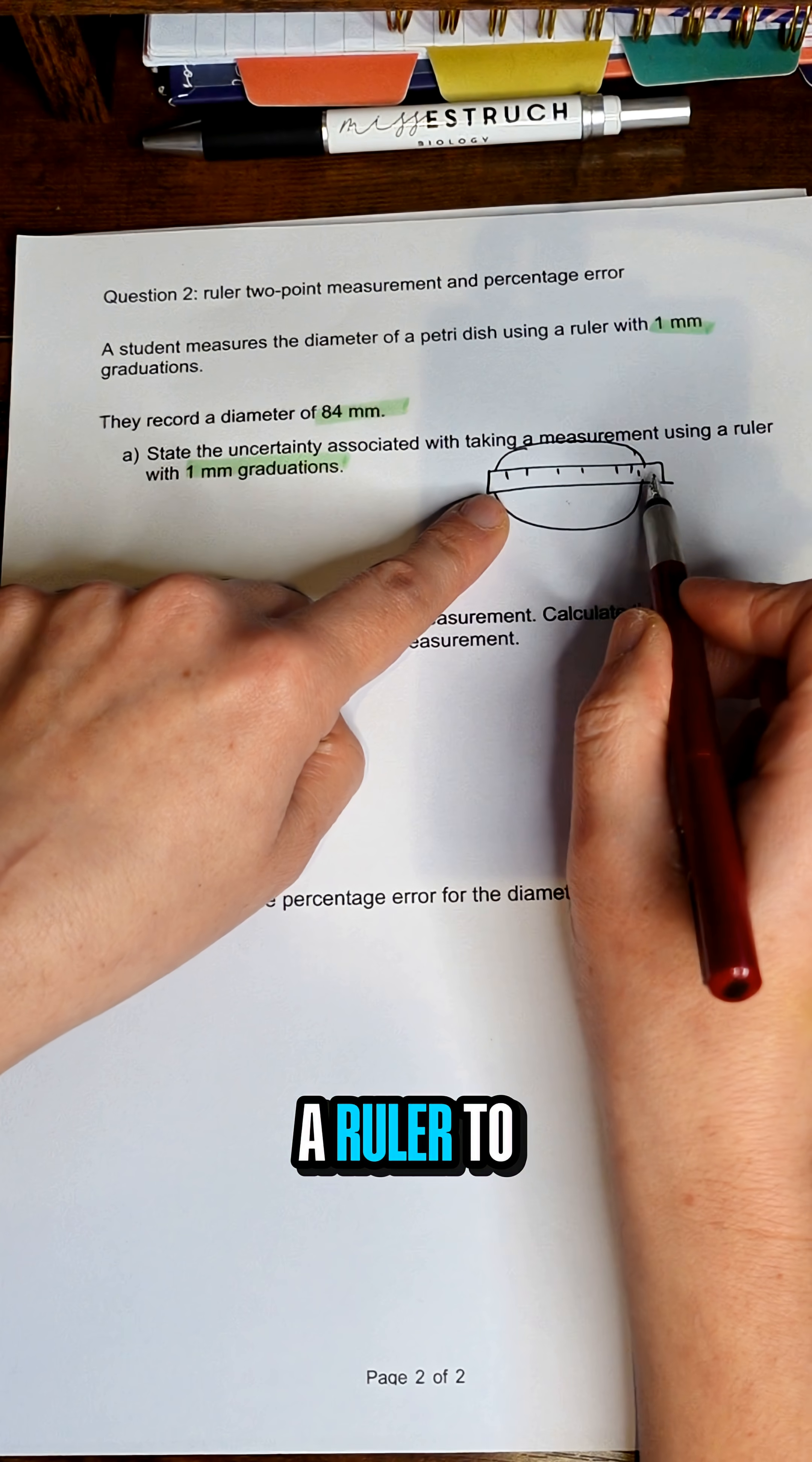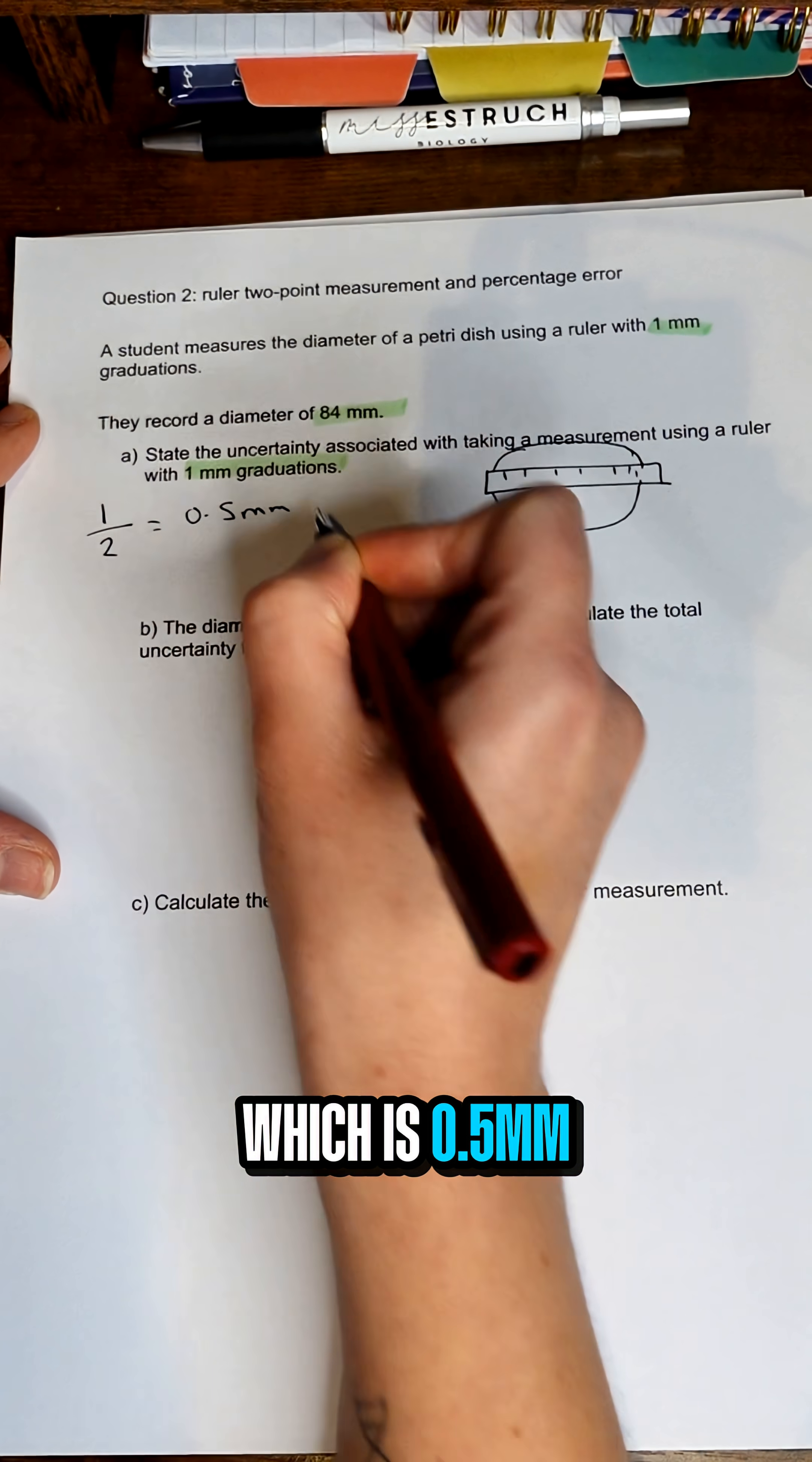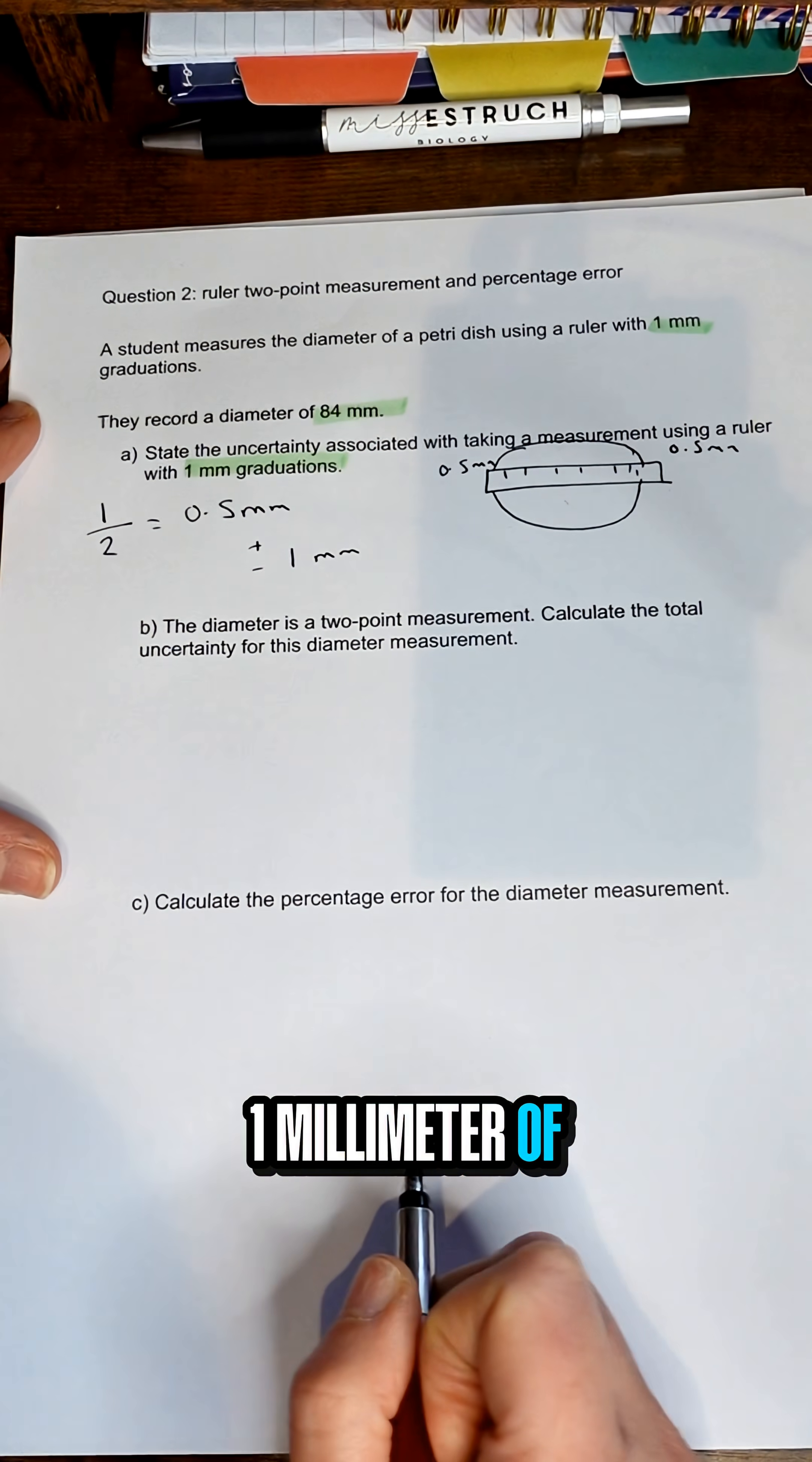However, because we're using a ruler to measure the diameter of this petri dish, there's going to be uncertainty in the point of measurement on this side and on this side. So although our uncertainty is one divided by two, which is 0.5 millimeters, we have 0.5 millimeters of uncertainty on this end and 0.5 millimeters of uncertainty on our measurement on this end. So if we add both of those back up together, that gives us plus or minus one millimeter of uncertainty.